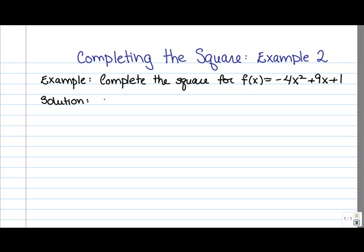So let's have a look at the solution. Let's begin by writing out our function. Next, we factor out the coefficient of x², which is -4 from the first two terms. And the +1 is going to be unaffected by all this.